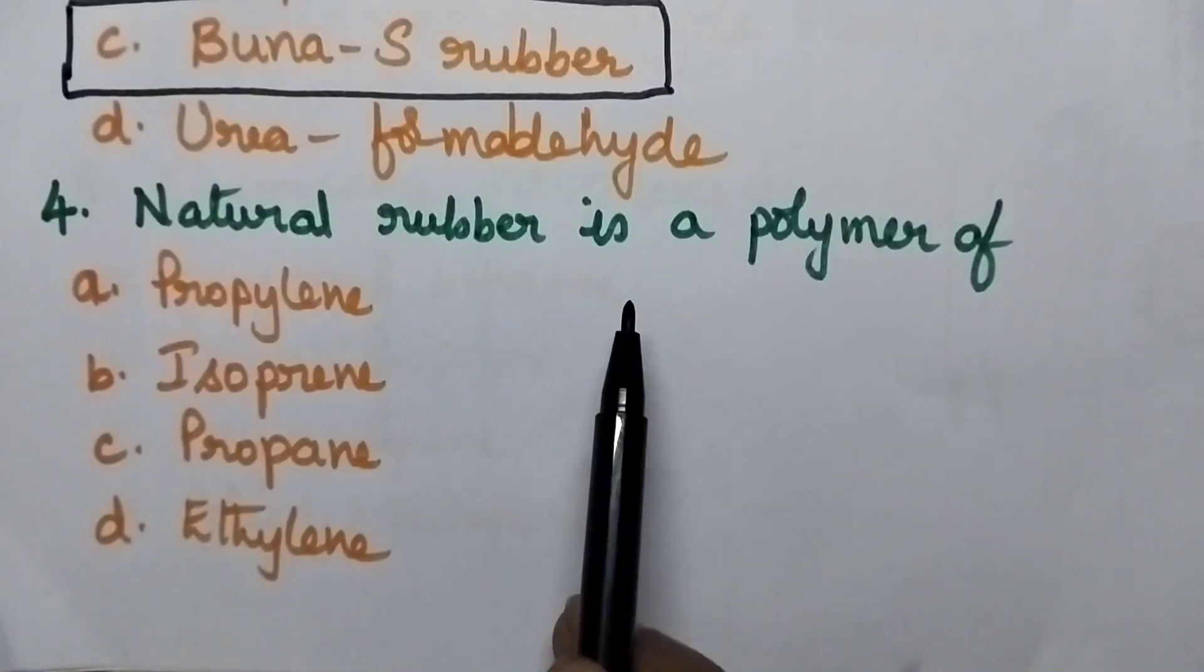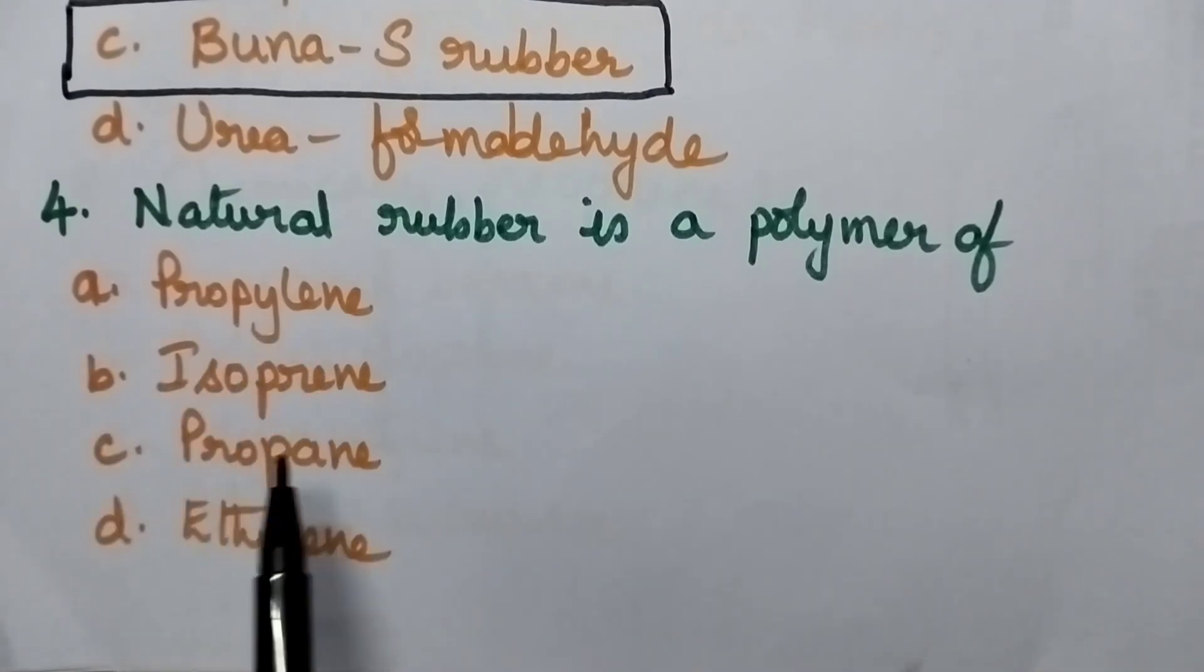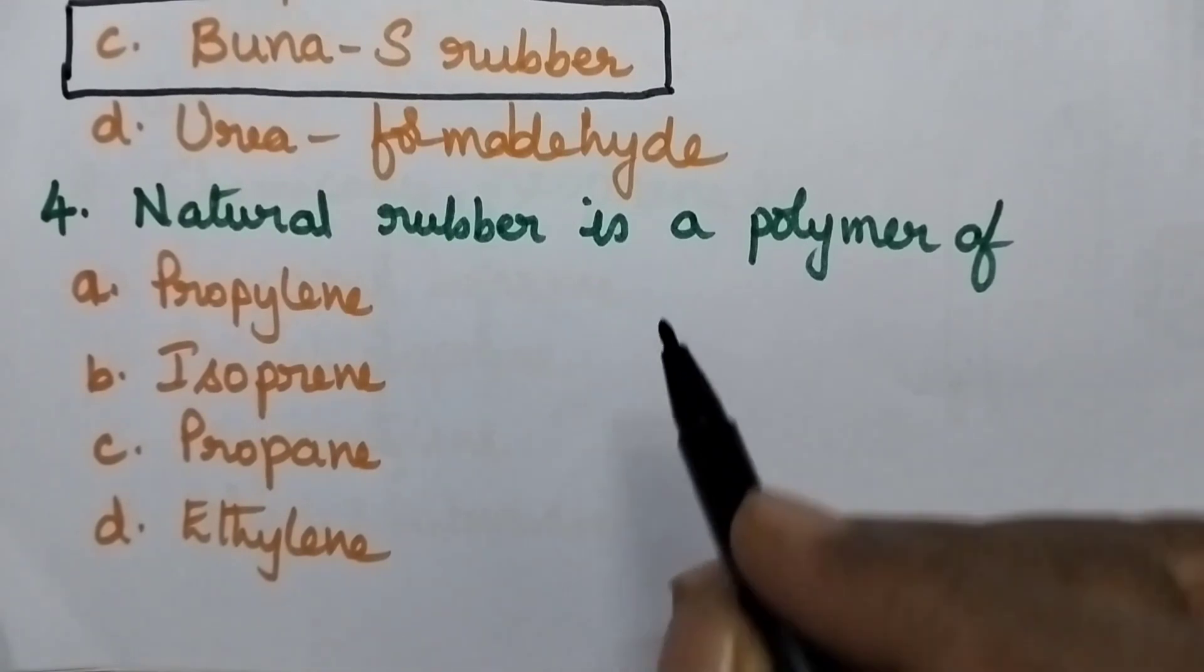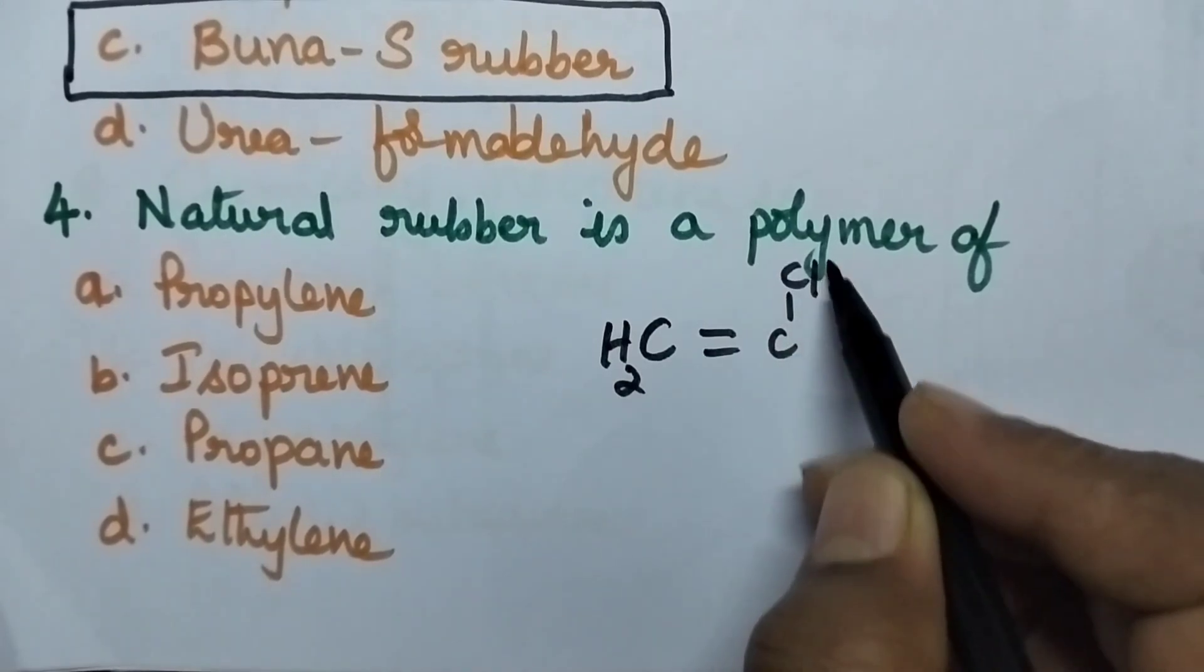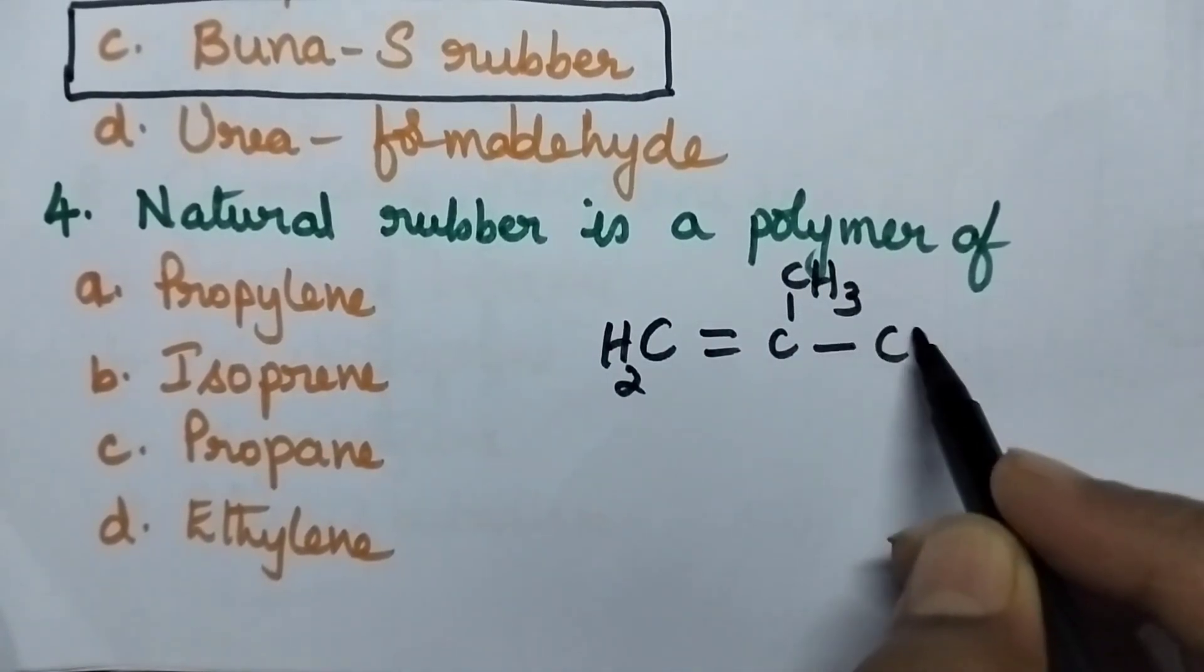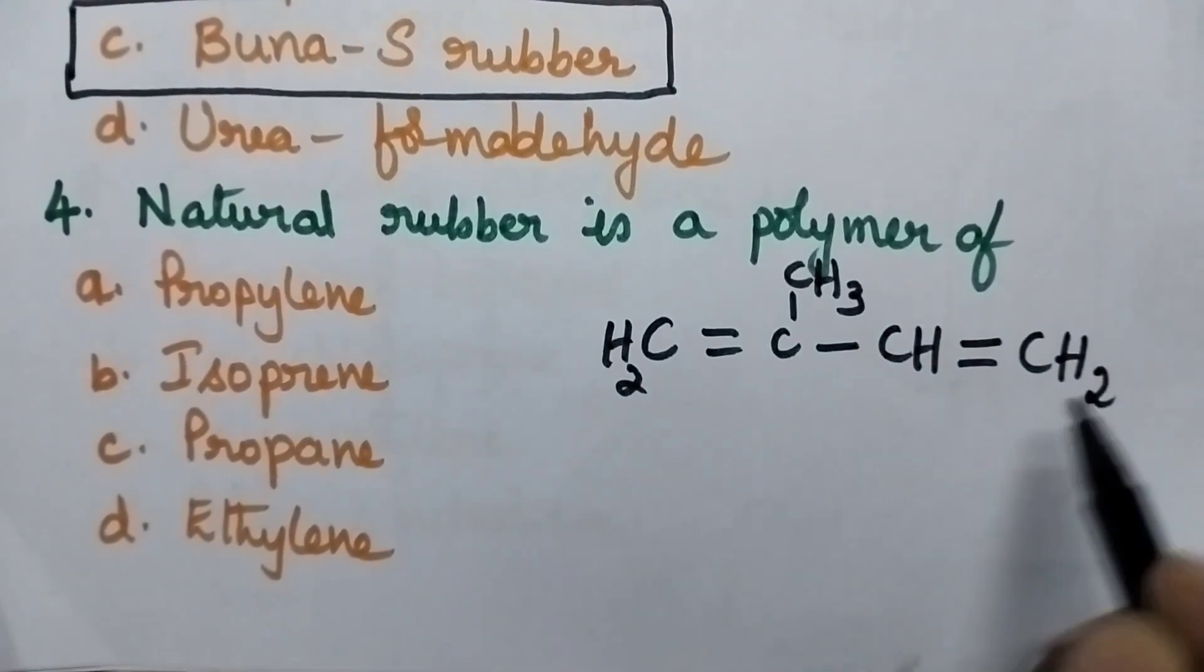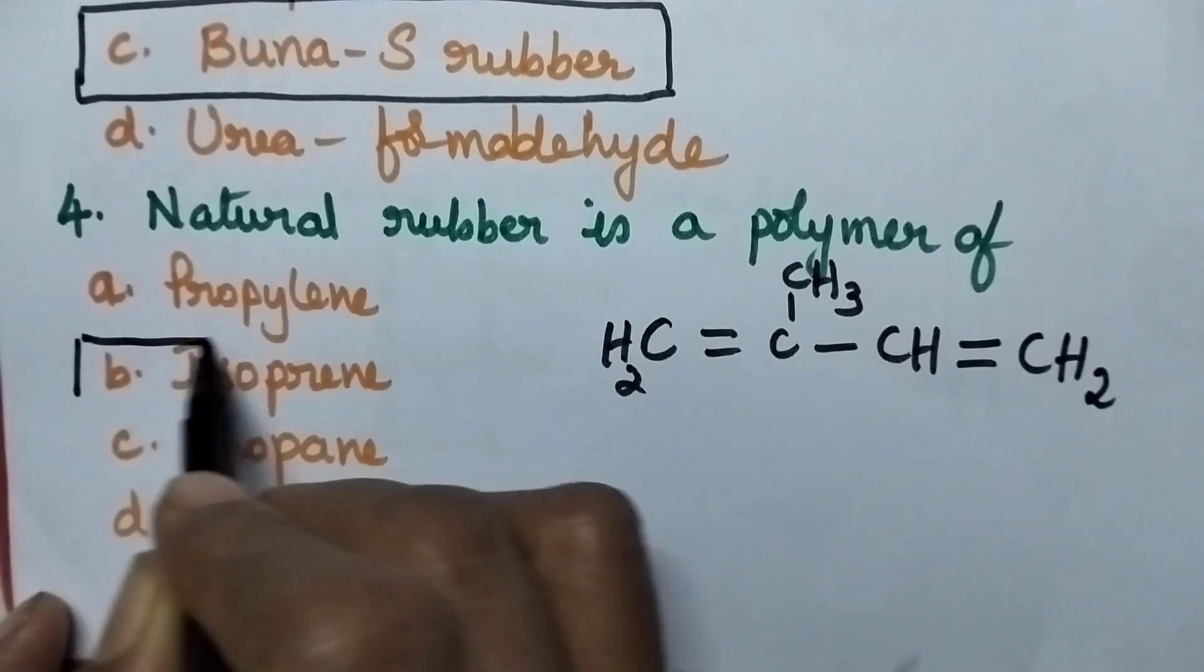Natural rubber is a polymer of option A. Propylene, B. Isoprene, C. Propane and D. Ethylene. So natural rubber means it is obtained by the polymerization of isoprene. That is CH2, double bond, CH, CH3, single bond, CH, double bond, CH2. It is called as isoprene. So option B is the right answer.